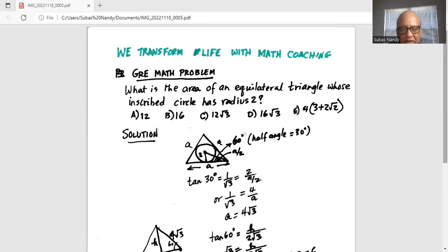Hence tangent of thirty degrees, which is one over square root of three, is equal to opposite side which is two, the height of the altitude, divided by the base which is a over two. So one over square root of three is four over a. Now if we do cross multiplication, a times one, that is a, is equal to four square root of three. Hence each side of the equilateral triangle is four square root of three.